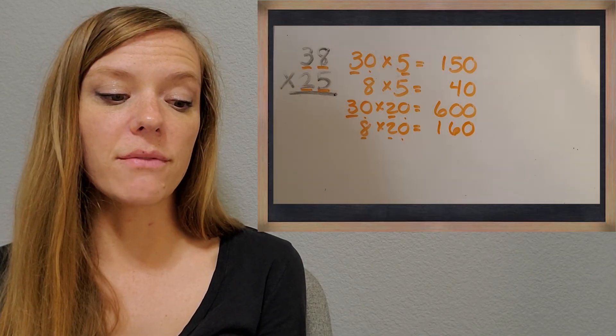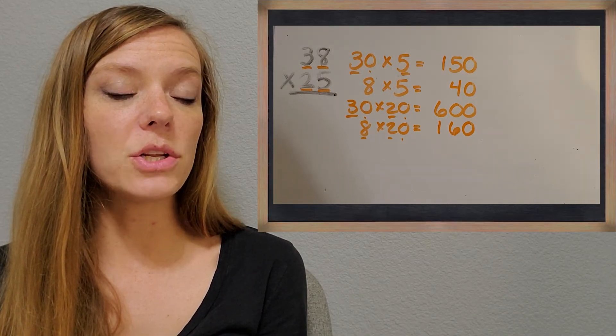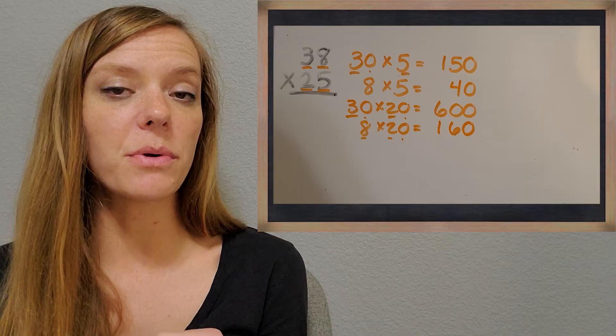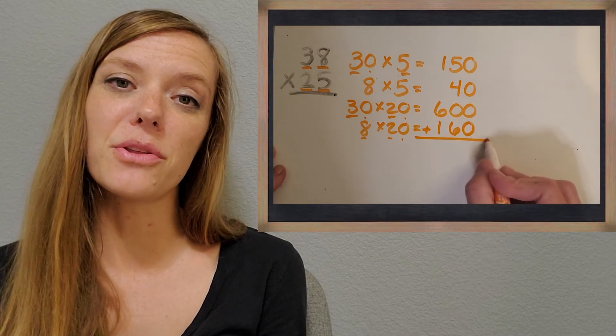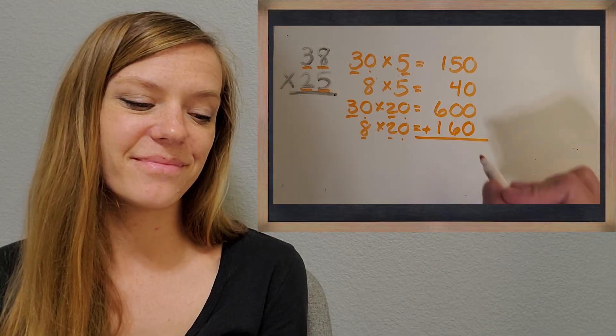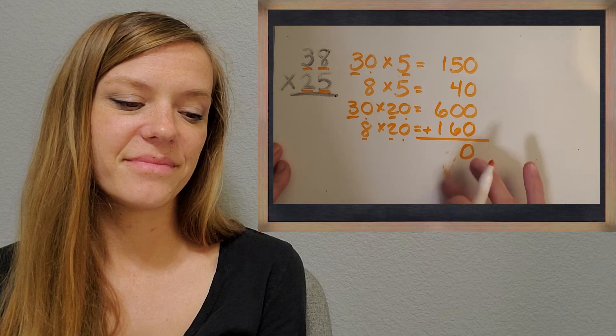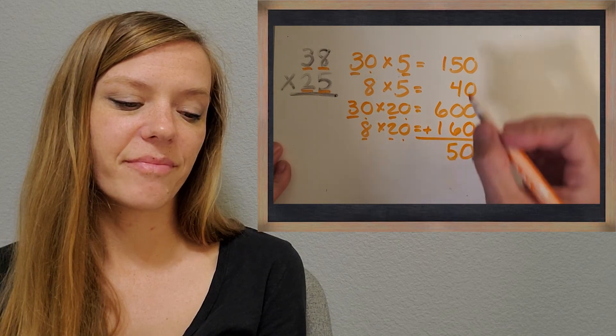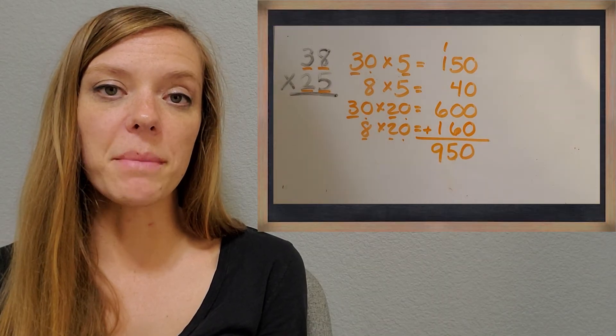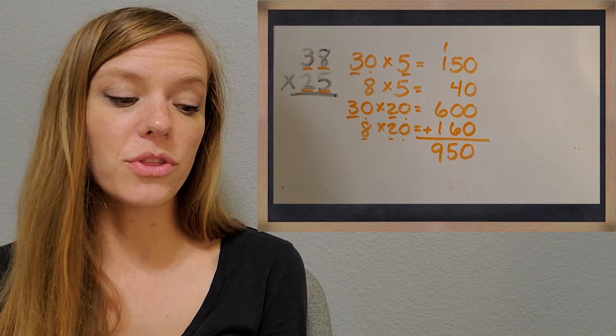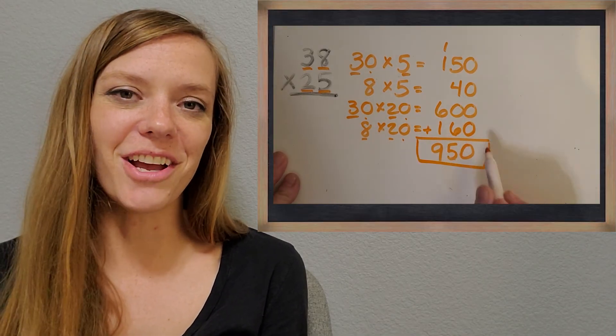All right, now that I've got all of my partial products written down, I'm going to do just like I did on the last problems, and add up all of those numbers. So let's add them together, see what we get. All right, I'm getting 950. So that means the answer to 38 times 25 is 950. Great job.